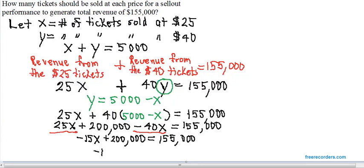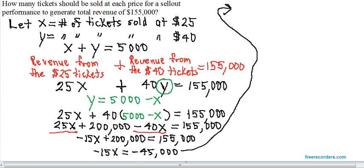To get that negative 15X term by itself, I'm going to subtract 200,000 from both sides. 155,000 minus 200,000 on your calculator gives you negative 45,000. And now we have to get rid of the times negative 15, so we're going to divide both sides by negative 15. On your calculator, negative 45,000 divided by negative 15 is positive 3,000. So we now know one of the two things we were trying to find.